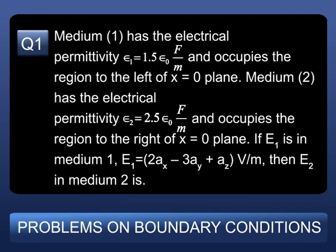What is problem 1? Medium 1 has electrical permittivity ε₁ = 1.5ε₀ farad per meter and occupies the region to the left side of the x=0 plane. Medium 2 has electrical permittivity ε₂ = 2.5ε₀ farad per meter and occupies the region to the right of the x=0 plane. If E₁ in medium 1 is E₁ = 2ax - 3ay + az volt per meter, then E₂ in medium 2 is?